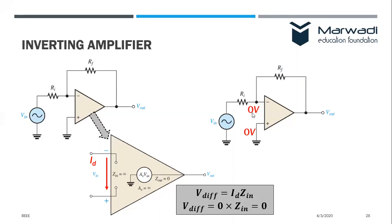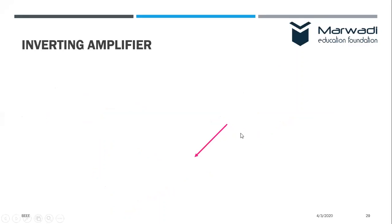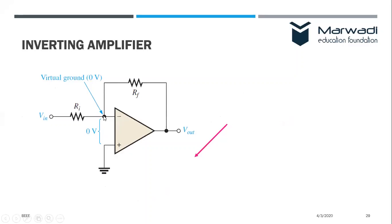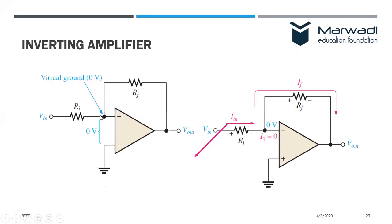So there is a virtual ground here — zero volts at this point. There will be an input current, and because there is no current going from the inverting to the non-inverting terminal, whatever is the input current, the same will be the feedback current. So I_in equals I_F — whatever is the incoming current, the same is the outgoing current.